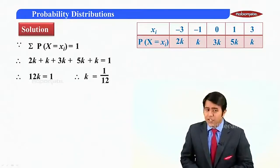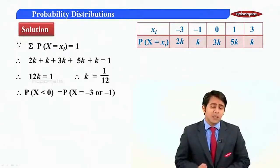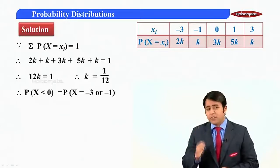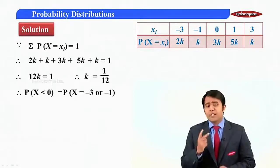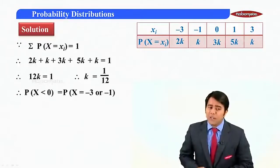So here we obtain the value for k. Moving further, p of x less than 0. This means that the value of x is less than 0. And if you observe the table above, there are only two values for x which are less than 0, which is minus 3 or minus 1.